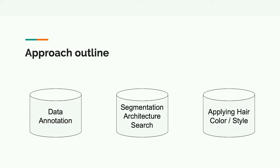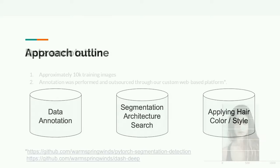So you see, 'Oh, this hair color looks nice and all my friends liked it — why don't I make it?' Our approach outline consists of three main building blocks: data annotation, segmentation architecture search, and applying hair color to the selected region. I'll go into each of these separate stages in more detail.